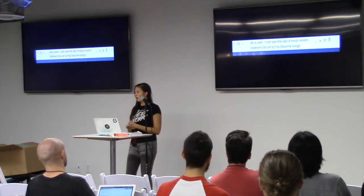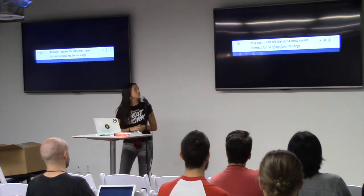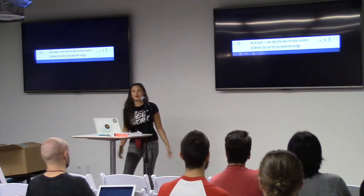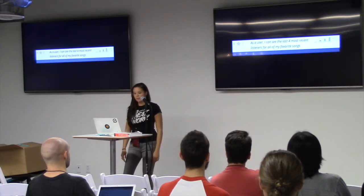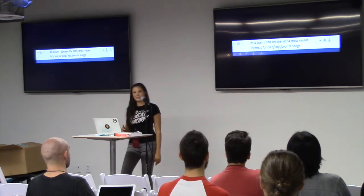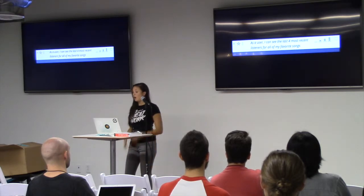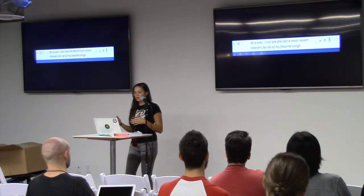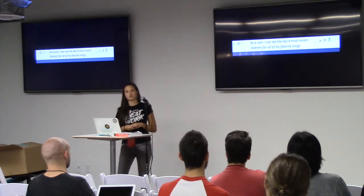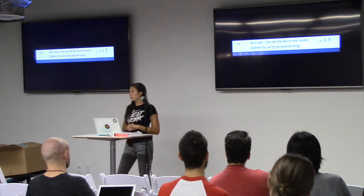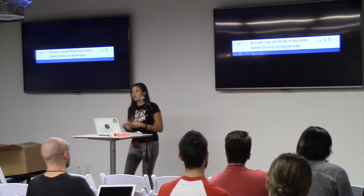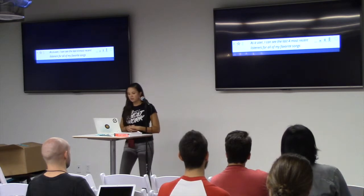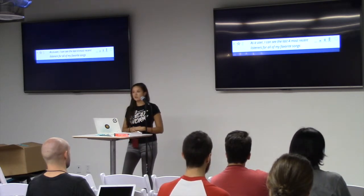My scenario is: you work for a popular music streaming company and get a feature request — as a user, I can see the last four most recent listeners for all of my favorite songs. I want to show the last five listeners for multiple songs all at one time, which is not a very easy thing to do. The naive way would be to loop through all favorite songs and generate a query per song, but that would produce an N+1 query in Rails, which are a no-no — or some really messy join query that would be hard to make performant. I have a ton of users and I know Active Record alone isn't going to cut it.